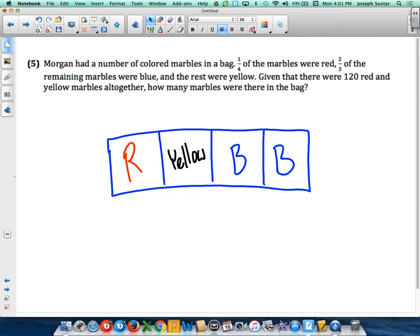Given that there were 120 red and yellow marbles altogether, so we know that these two pieces are worth 120. How many marbles were there in the bag? So if two pieces are worth 120, that means that these two pieces are also worth 120. 120 plus 120, altogether we have 240.